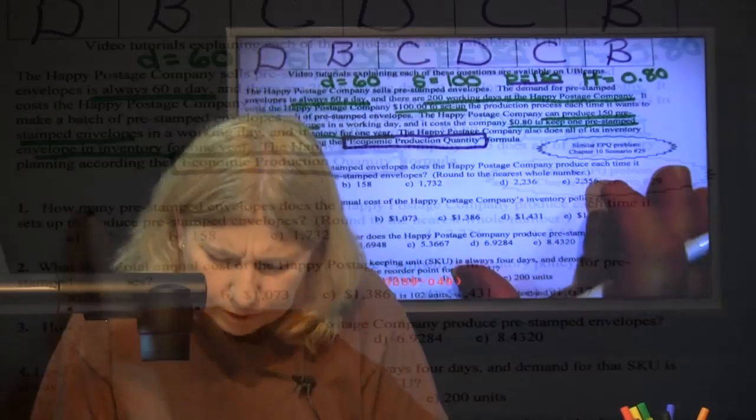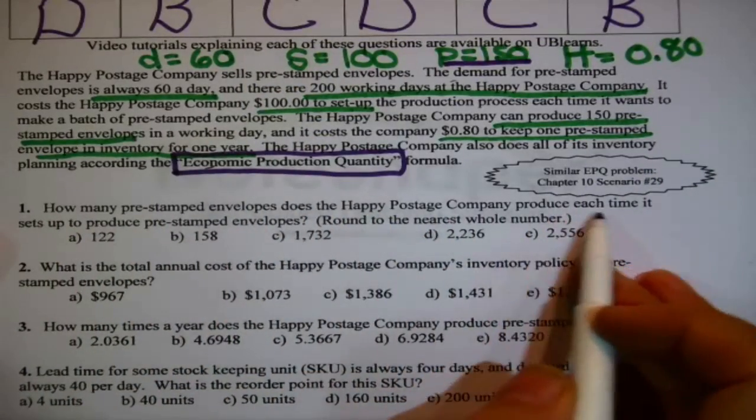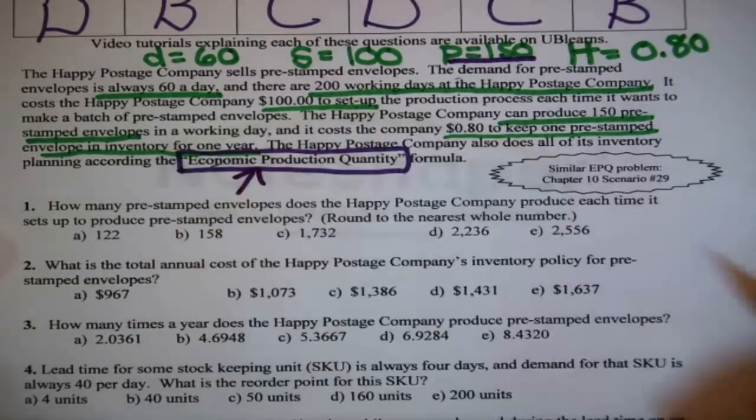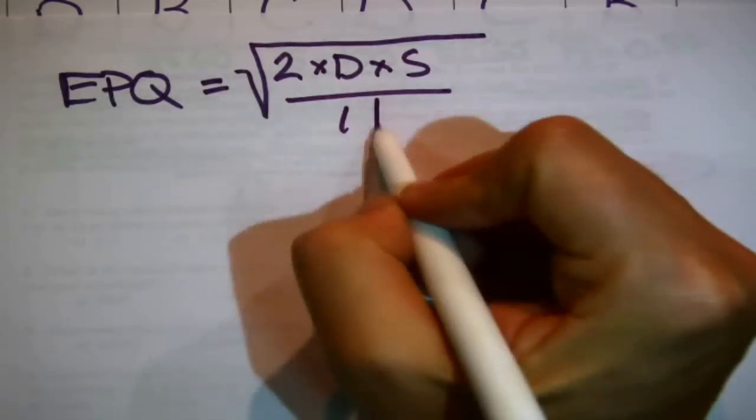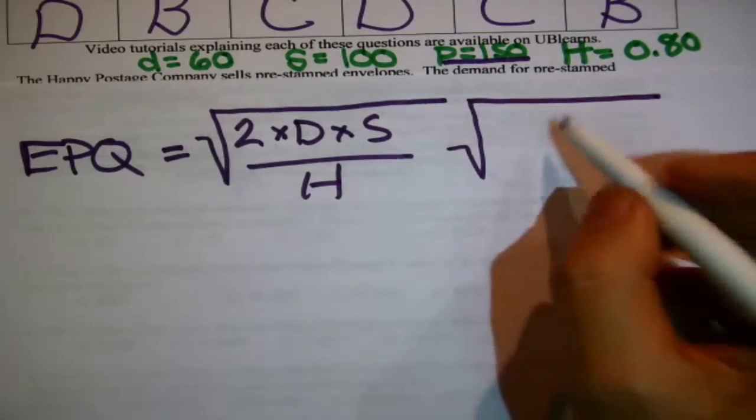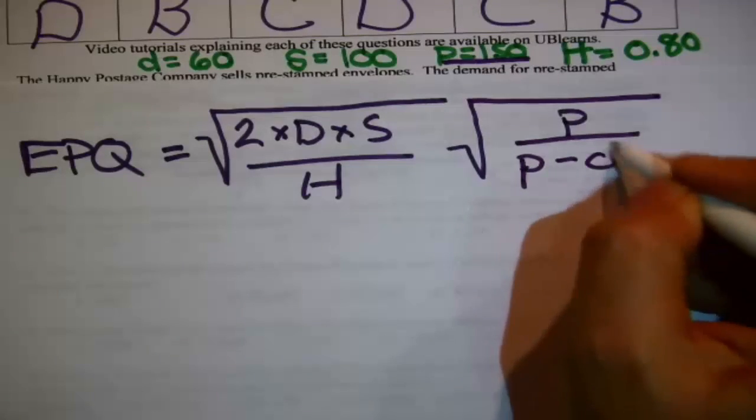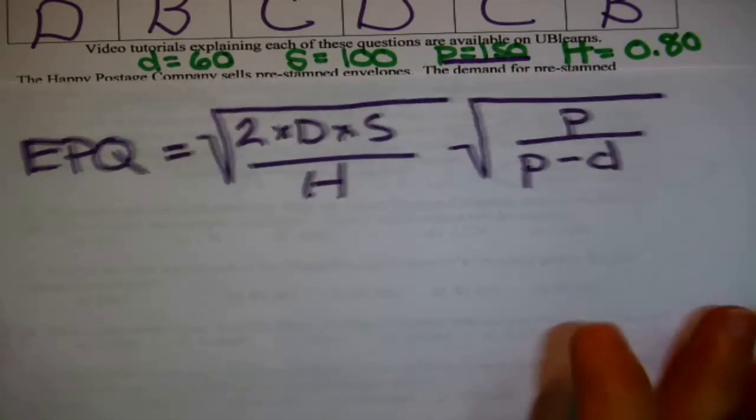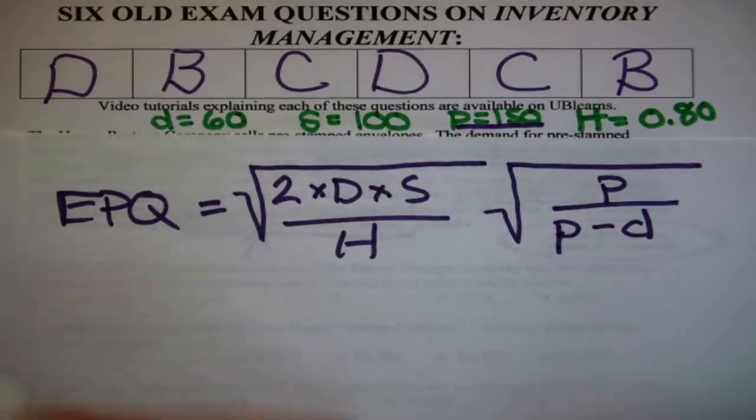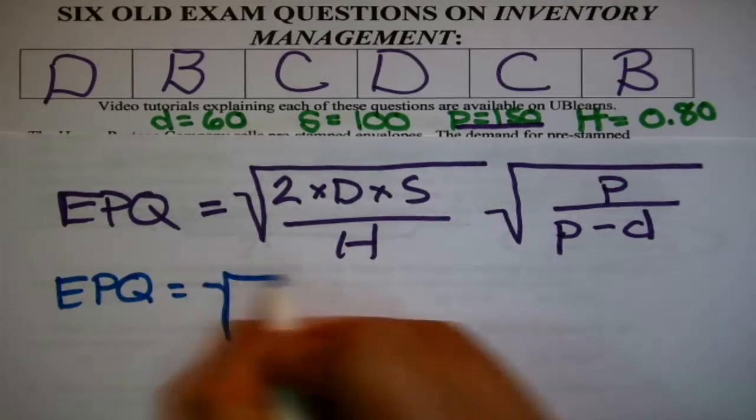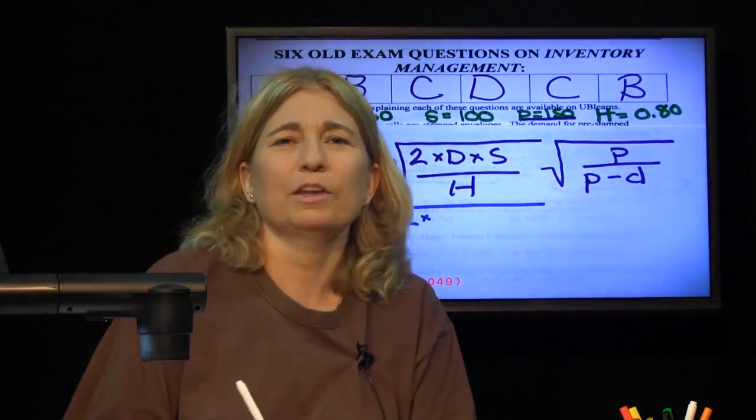What is it we're supposed to answer? How many pre-stamped envelopes does the Happy Postage Company produce each time it sets up to produce pre-stamped envelopes? They said they're using the EPQ formula. So this is just a question asking us to fill out that formula. How did the EPQ formula read, the economic production quantity? It's the square root of 2 times D times S divided by H, except with the EPQ there's more. That's multiplied by the square root of P divided by P minus D. All I need to do is now fill this out because I collected everything that we need.